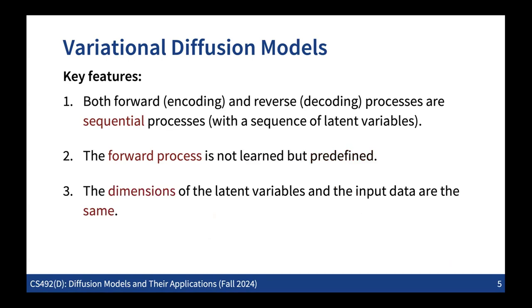The third key feature, especially for diffusion models, is that we are going to match the dimensions of all the latent variables with the input data. There is no dimension reduction happening - all the data points and the latent variables are basically having the same dimensions.